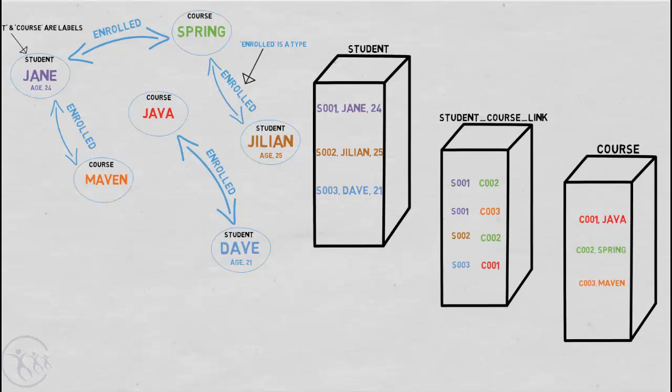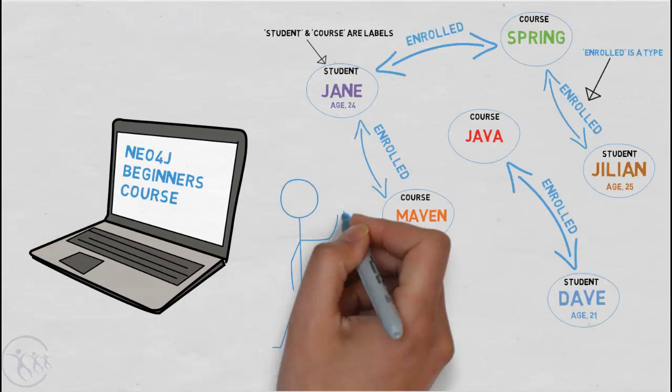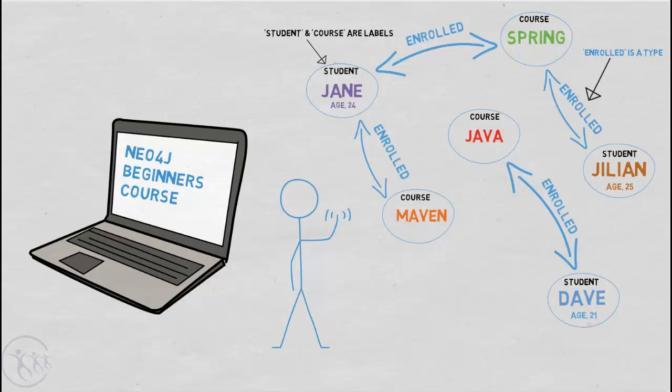Now in the coming tutorials, I'll be using this very example of students and courses. And I want to show how easy it is to build your very own Neo4j graph database. And what's more how to access the data and update it using the Cypher language or CQL.